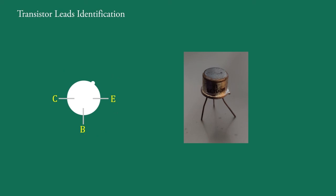That is, starting from the tab and moving in the clockwise direction, the first lead is the emitter, the second is the base, and the third is the collector. In this way, we can identify the leads of the transistor.